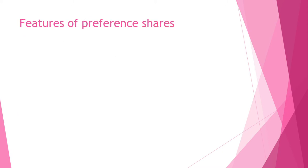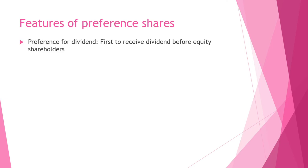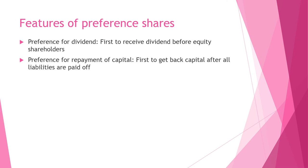Let us understand the features of preference shares. Preference for Dividend — equity shareholders get their dividend only after dividend is paid to preference shareholders; preference shareholders receive the dividend first. Preference for Repayment of Capital — if the company is going to be liquidated and closed down, after all liabilities are paid off, preference is given to repayment of capital for preference shareholders; they have priority for repayment of capital.